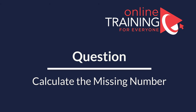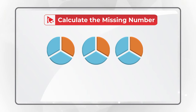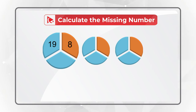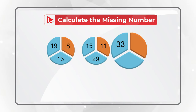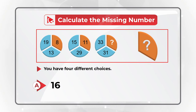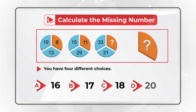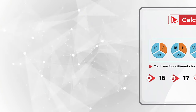Here is a puzzling question with a very surprising solution. You're presented with three circles, each broken into three equal parts. The first circle has numbers 8, 19, and 13. The second circle has numbers 11, 15, and 29. The third circle has numbers 33, 31, and a missing number. Your choices are: A) 16, B) 17, C) 18, and D) 20.